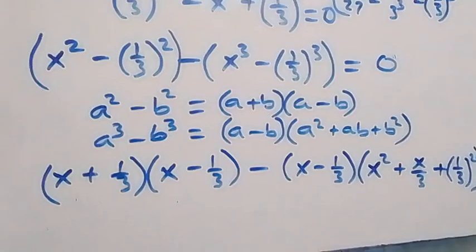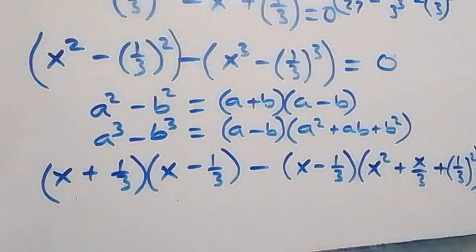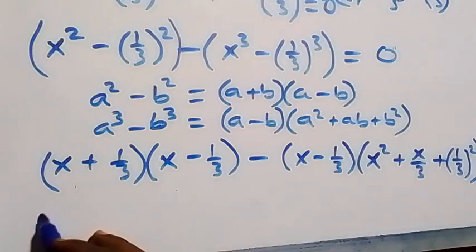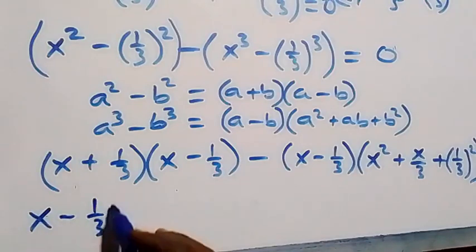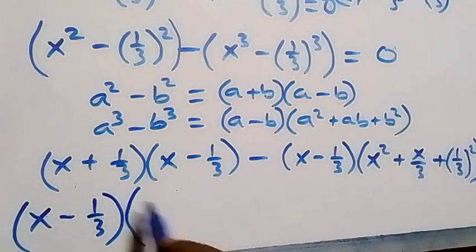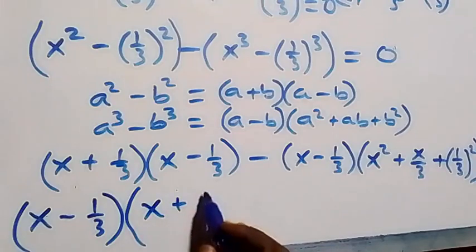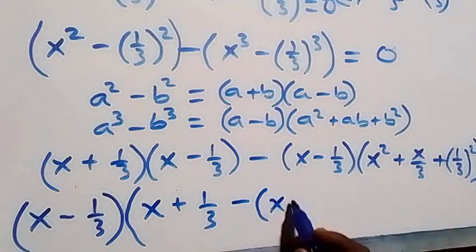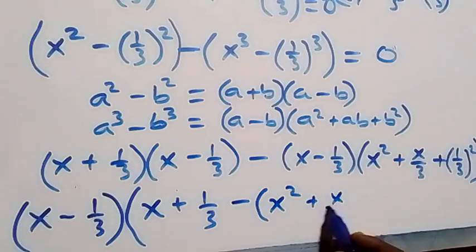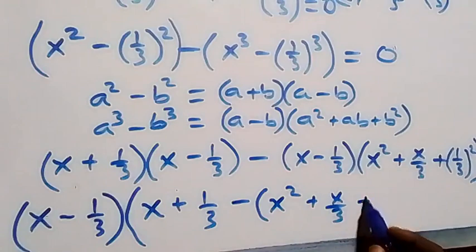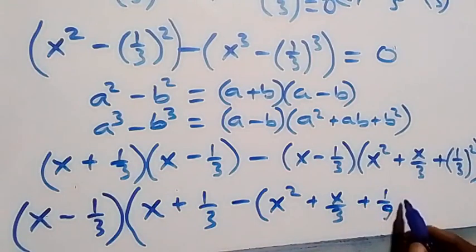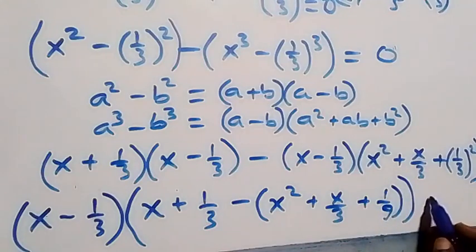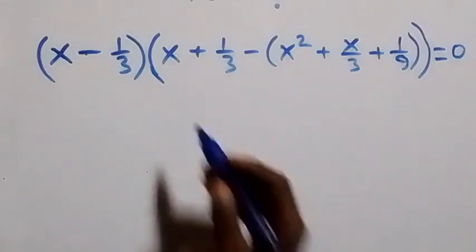From here, we can see x minus 1 over 3 is common. We bring it out, and inside the bracket what is left is x plus 1 over 3, then plus 1 over 3, then plus 1 over 9, close bracket, equals to zero.